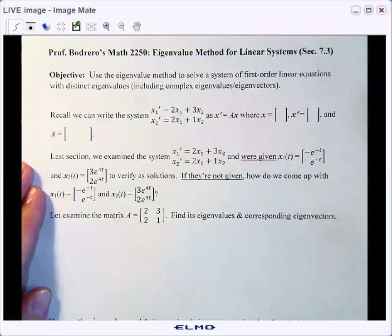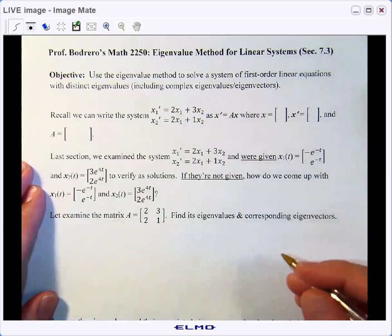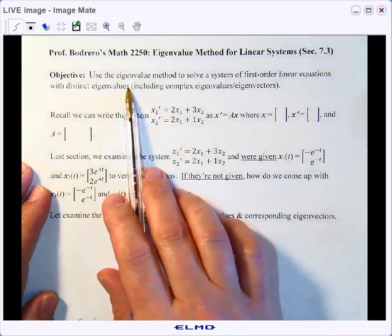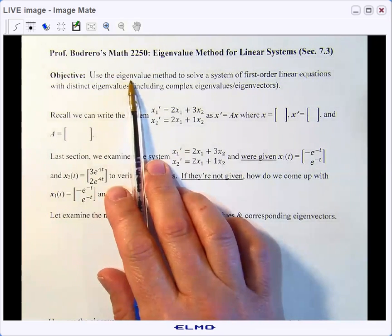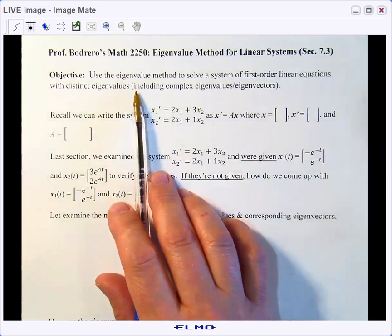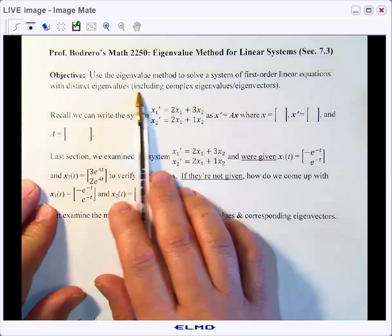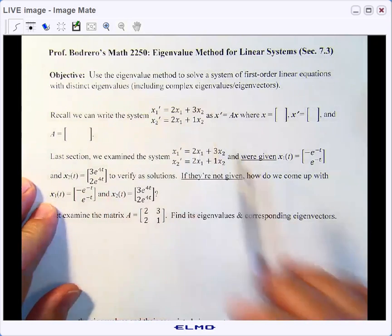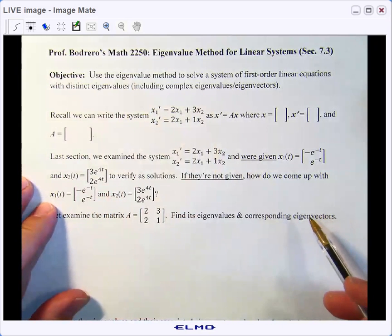Section 7.3, the eigenvalue method for solving linear systems of differential equations. We're going to use what we've learned about eigenvalues from previous sections to solve a system of first-order linear equations with distinct eigenvalues, and this will include complex eigenvalues and eigenvectors.